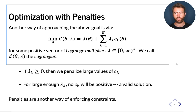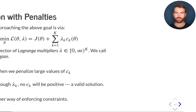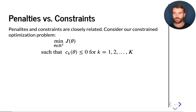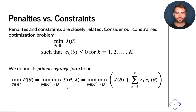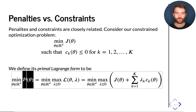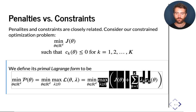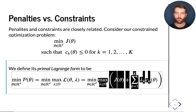Penalties and constraints are very closely related. We can define the primal Lagrange form of this optimization problem as follows: the function p(theta), where p stands for primal, is defined as the maximum of the Lagrangian over the weights lambda. Similarly to how we minimize the constraint objective, we can also minimize this primal Lagrange form over the space of theta.